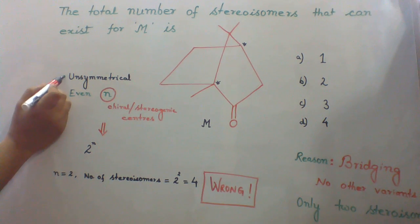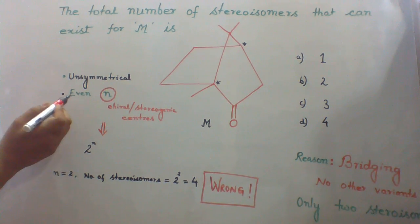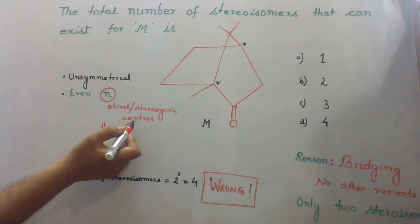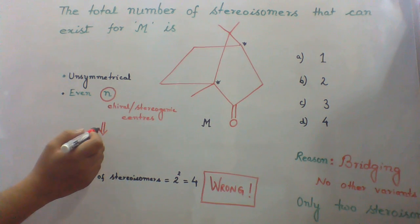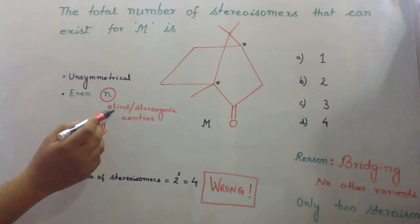For molecules which are unsymmetrical and which have even number of chiral or stereogenic centers, there is a formula to calculate number of stereoisomers, that is, 2 raised to the power N, where N is the number of chiral centers.